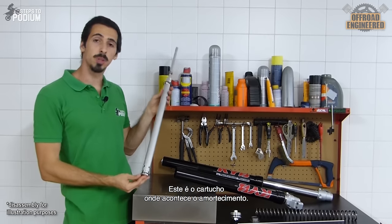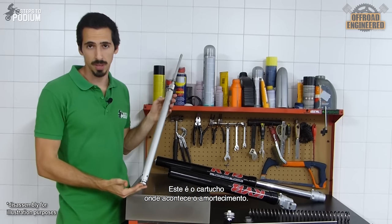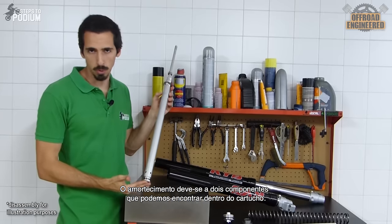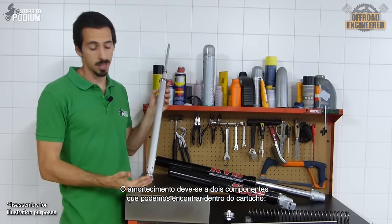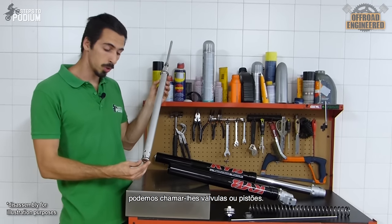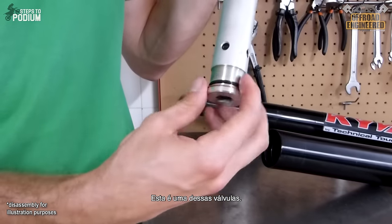So this is the actual cartridge where the damping occurs, thanks to two really special components that are placed inside it, called the valves, also known as pistons. And this is one of them.